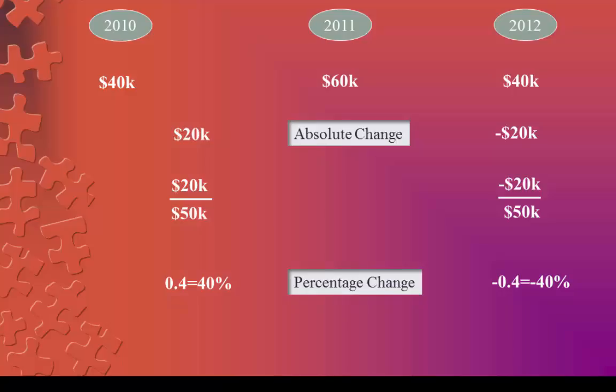This makes more sense. An equal up and down in the budget is reflected by plus 40% and negative 40%, and this is only one advantage of the midpoint formula.